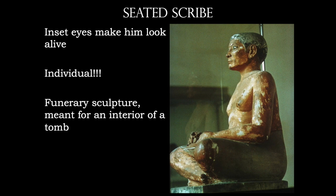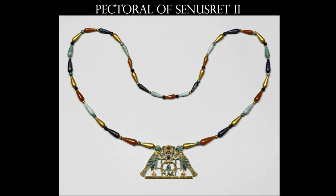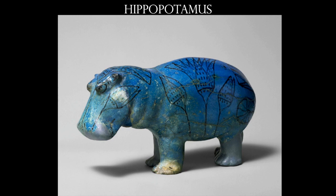Then we have the Middle Kingdom. I put in some items of jewelry and faience — earthenware, a type of pottery or ceramics not fired at very high temperatures in a kiln and therefore very easily breakable. The faience hippopotamus is cool because hippopotami are dangerous — the animal that killed King Narmer — and they damage crops. It's in blue, hiding in the water, and it's got images of lotus on its surface.